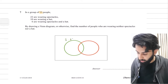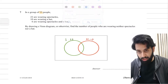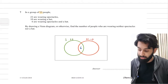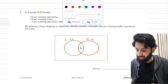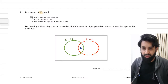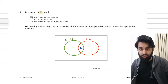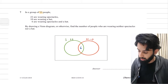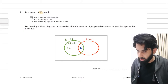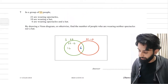The number wearing spectacles is 22, wearing a hat is 10, and wearing both is 6. From this I can work out two things. The number wearing just spectacles is 22 minus 6, because 22 is the total wearing spectacles and 6 of those are also wearing a hat, so subtracting gives us spectacles only, which is 16. And the number wearing just a hat is 10 minus 6, which equals 4.